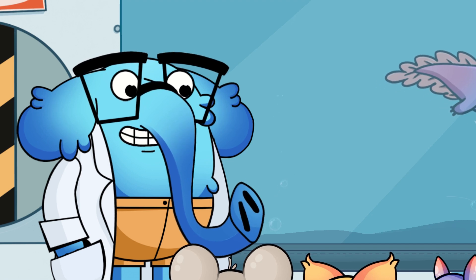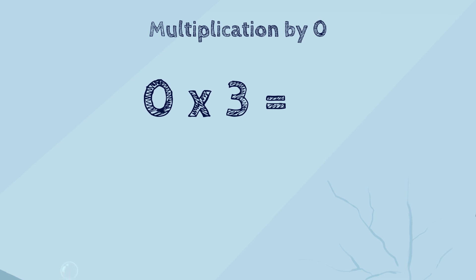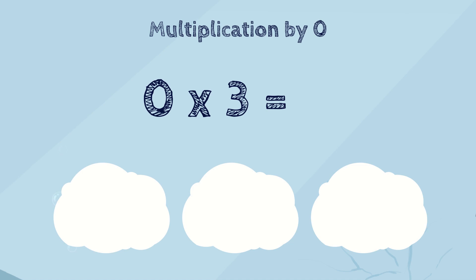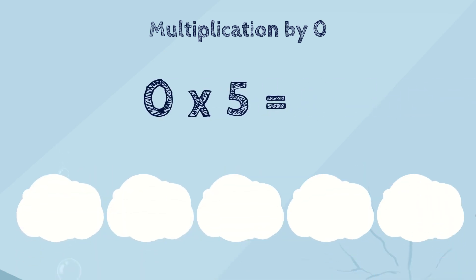Now let's look at multiplication by zero. Let's think what zero multiplied by three means. It means that we have three groups of nothing. What will it be in total? Nothing? Yes, sure! It will be nothing, or zero. And what if we multiply zero by five? It's still nothing! No matter how many times we add nothing, the answer is always nothing.